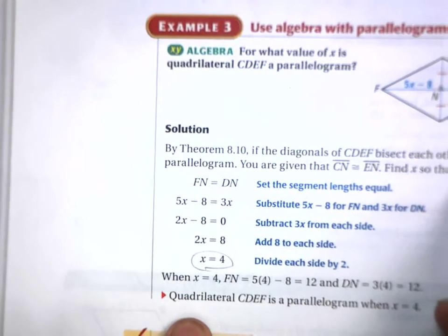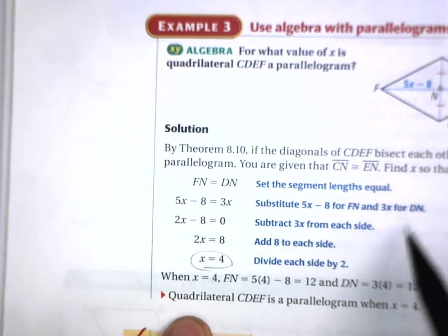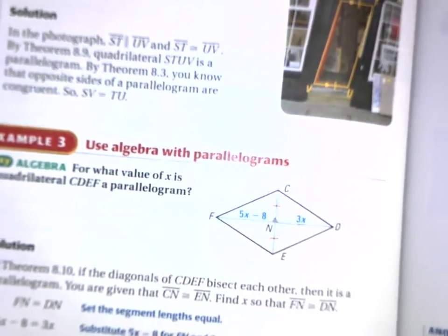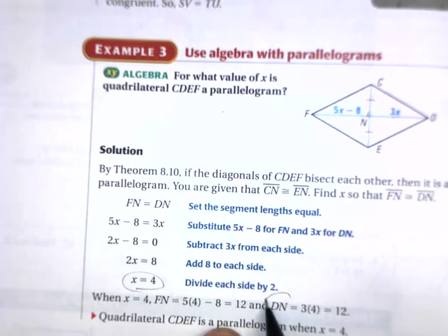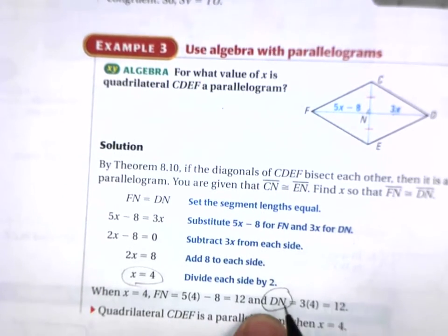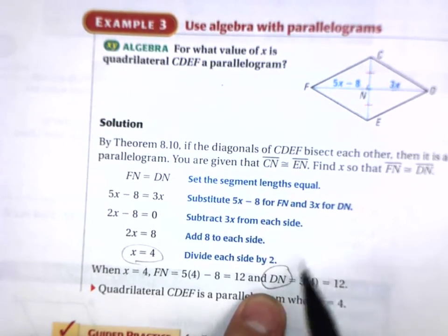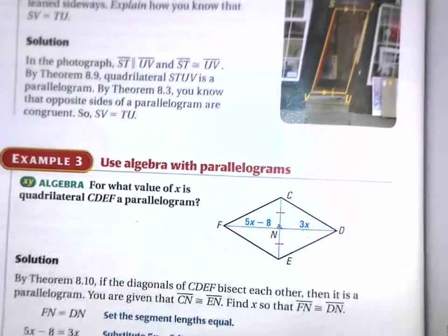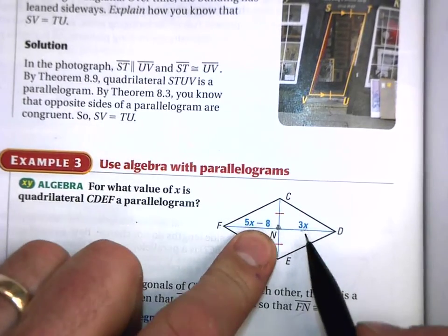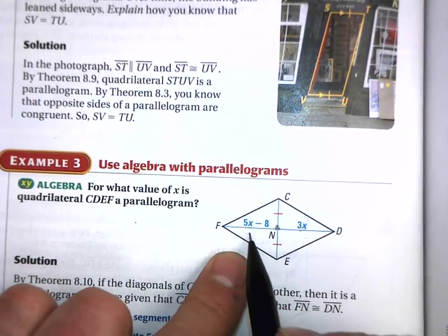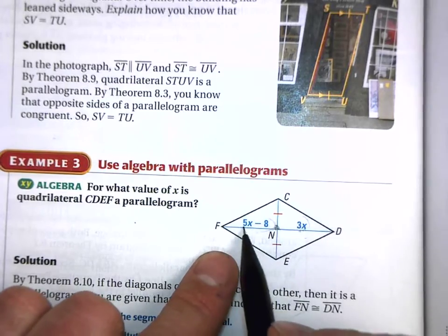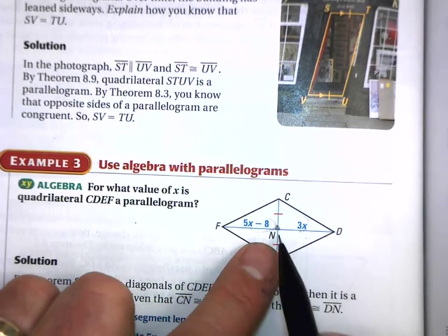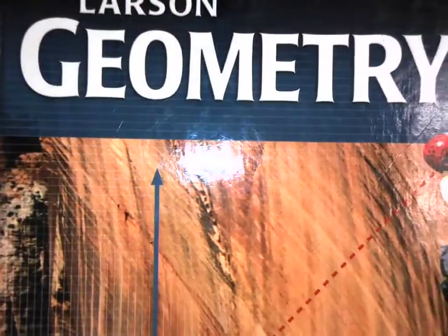They're also asking for the length of segment DN. When it just has two letters, that's referring to the length of that segment. So you plug your value of x into 3x — or you could plug it into 5x minus 8, because both segments are congruent since this point is the midpoint.